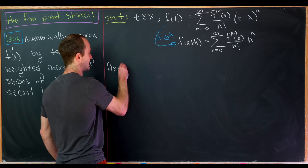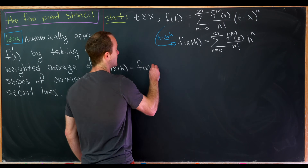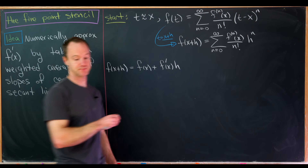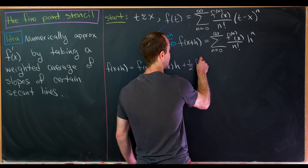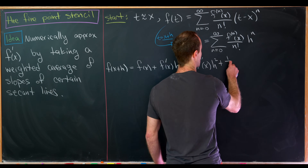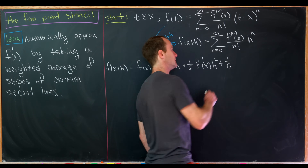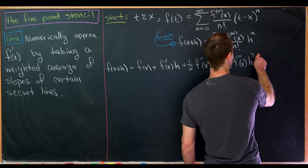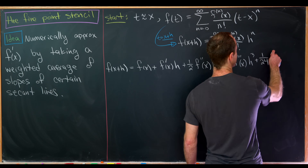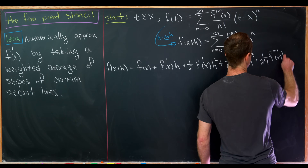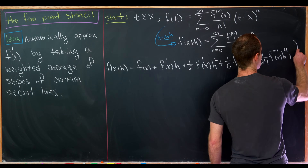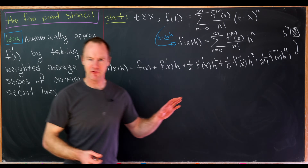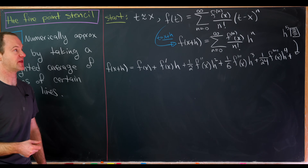So f of x plus h equals f of x plus f prime of x times h, plus one-half f double prime of x times h squared, plus one-sixth f triple prime of x times h cubed, plus one over 24 f quadruple prime of x times h to the fourth, plus h to the fifth times some other stuff — everything left over, we can factor an h to the fifth out of.